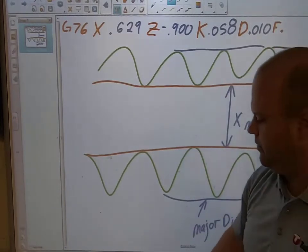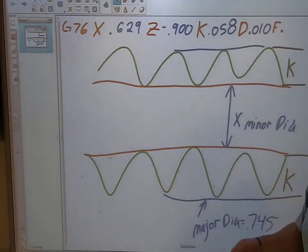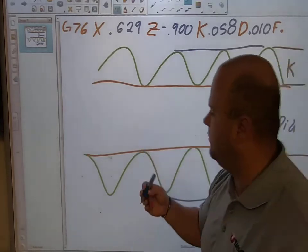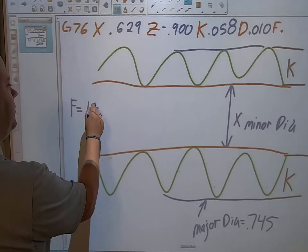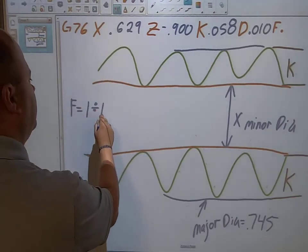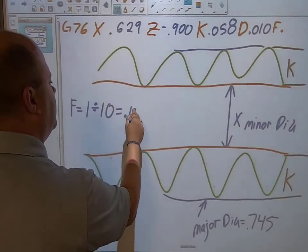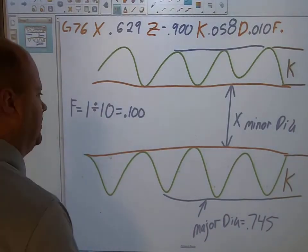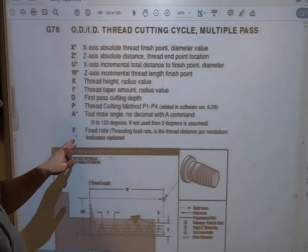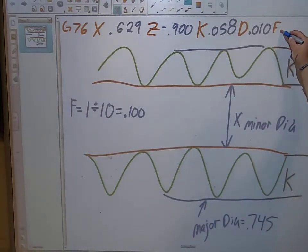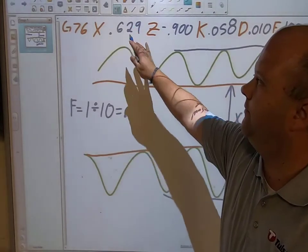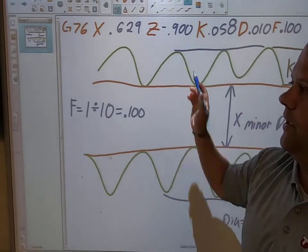To calculate the feed rate, I do 1 divided by TPI. So 1 divided by 10 equals 100 thousandths. That can also be found in the book if needed. So my feed rate F equals 0.100. That's all you need. It seems like a lot but what we did was identify the variables we needed and find out what they had to be.